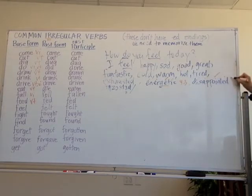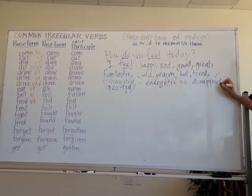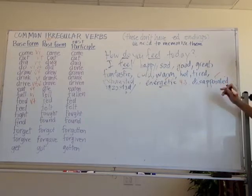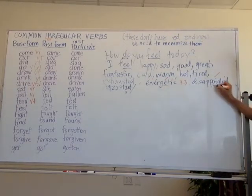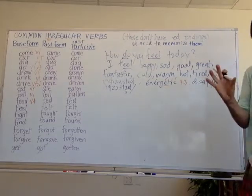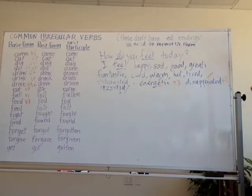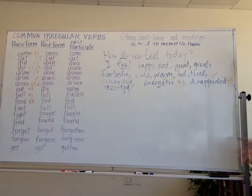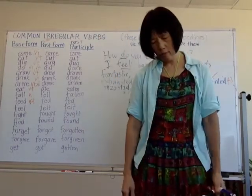Disappointed has four syllables. The stress is on the third syllable: dis-ap-POINT-ed. So four syllables, stress on syllable three: disappointed. If you feel disappointed, you expected something and then you didn't get it.